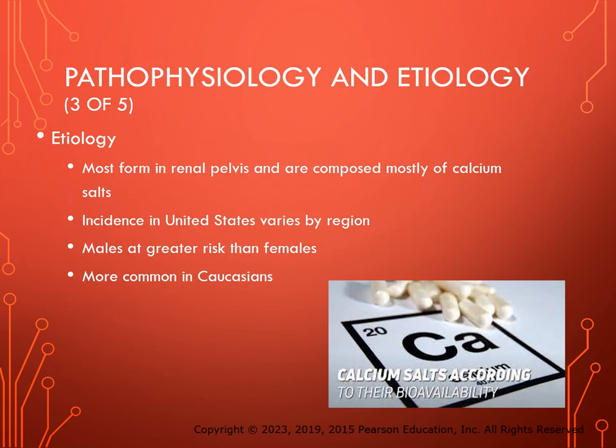Most urinary calculi form in the renal pelvis and are composed primarily of calcium salts. In the United States, approximately 5% of adults experienced renal calculi in 1994, increasing to 9% in 2010. Approximately half of all individuals who experience a kidney stone are likely to have a recurrence within 10 years. Incidence varies by region, with the highest frequency in the South. Males are at greater risk than females, and calculi are more common in non-Hispanic white populations.